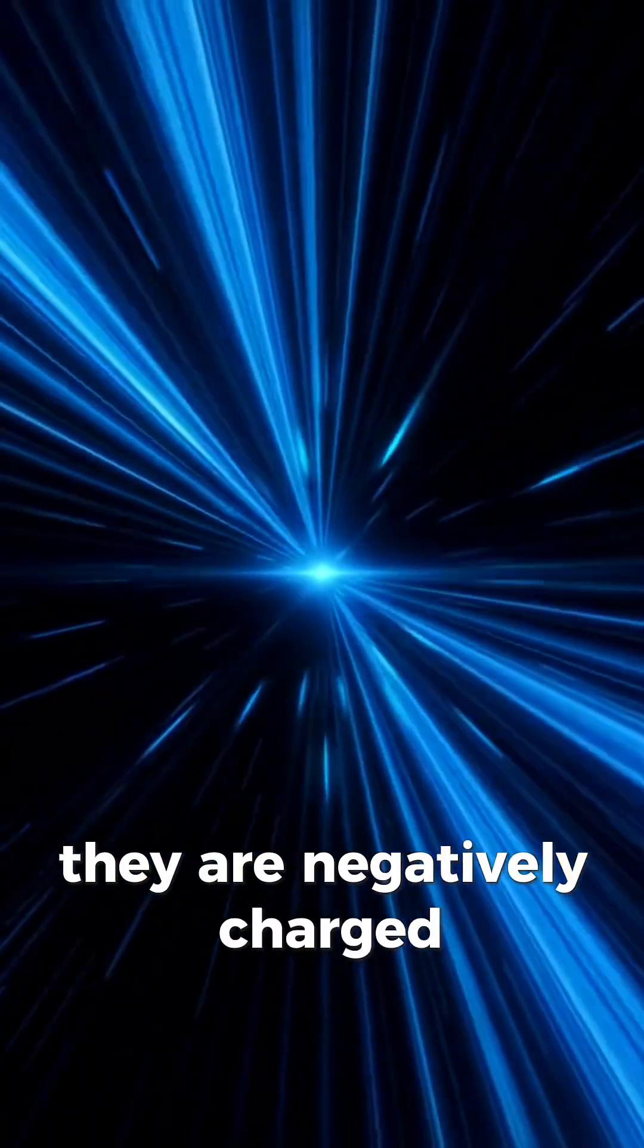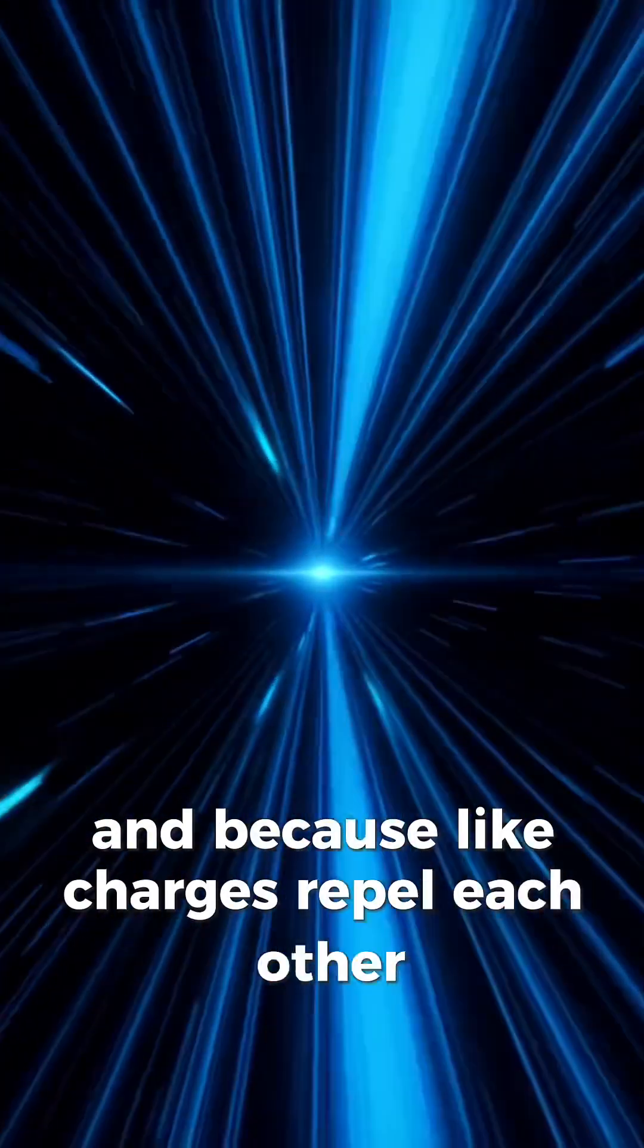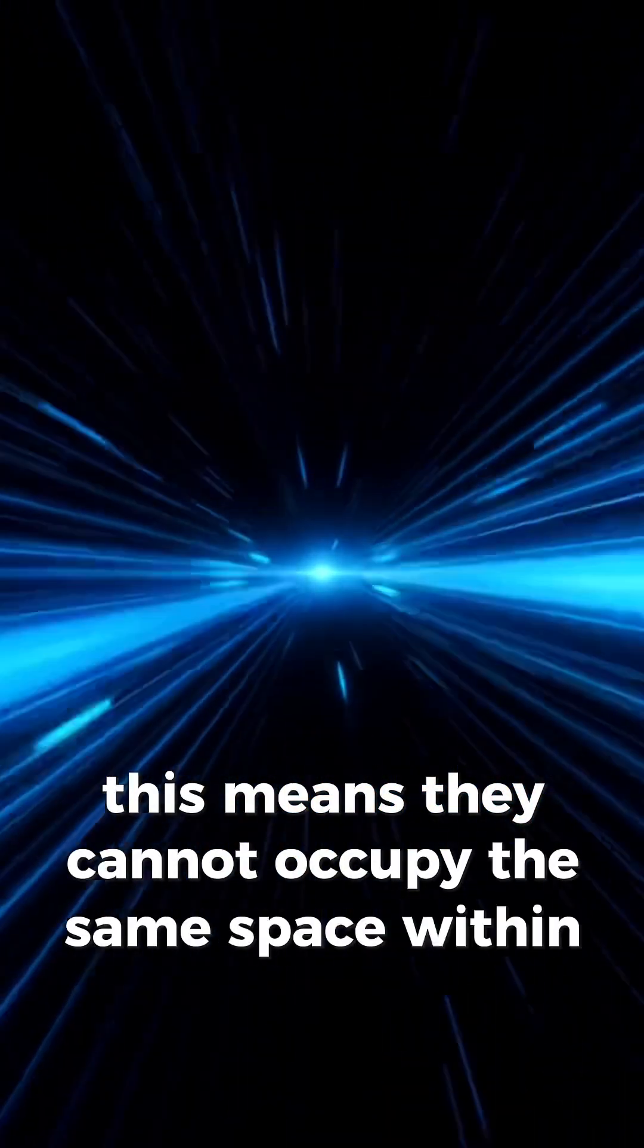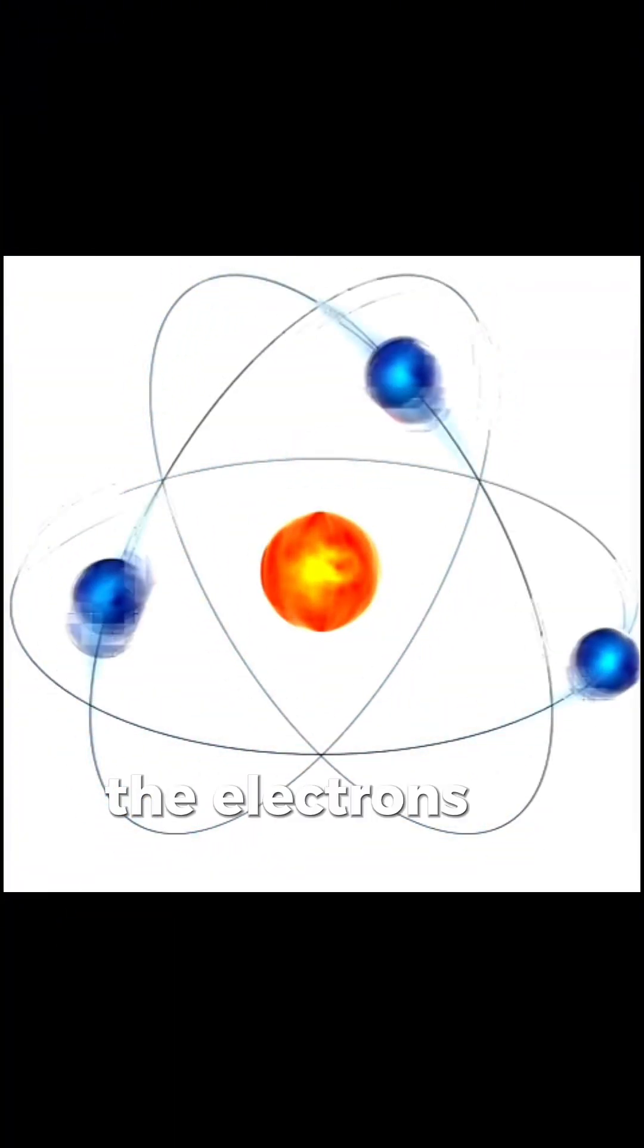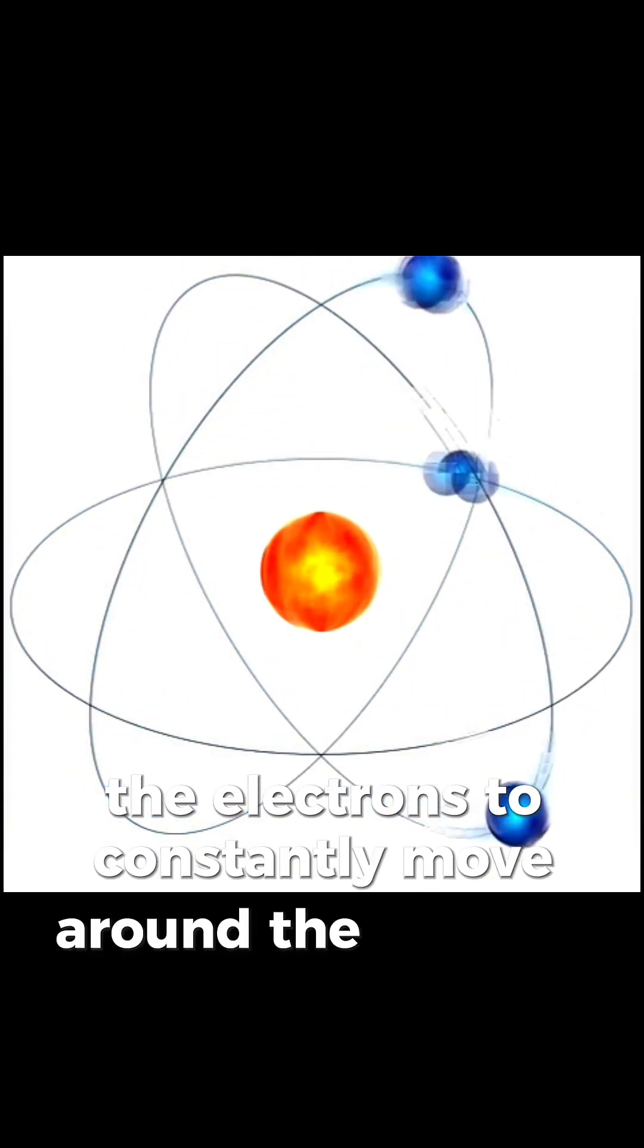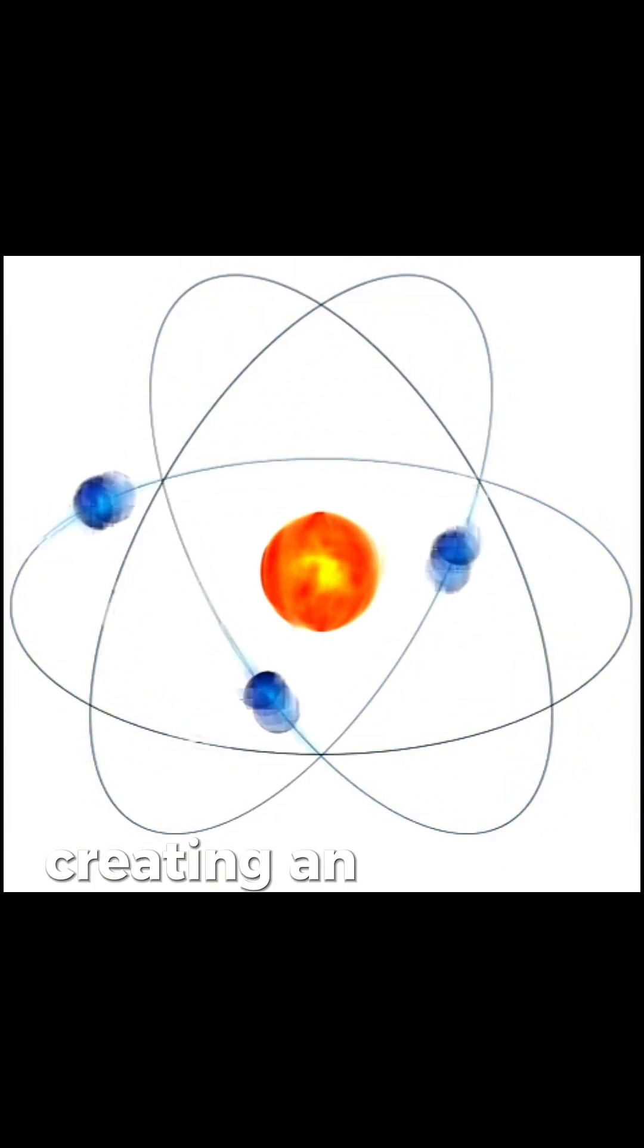They are negatively charged and because like charges repel each other, this means they cannot occupy the same space within the atom. This causes the electrons to constantly move around the nucleus of the atom creating an electron cloud.